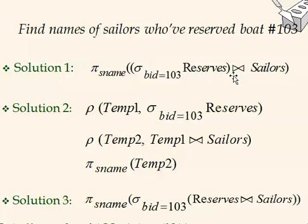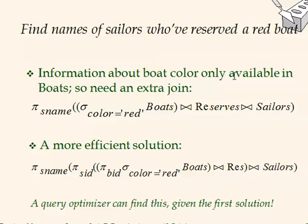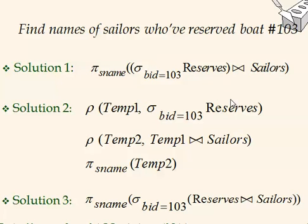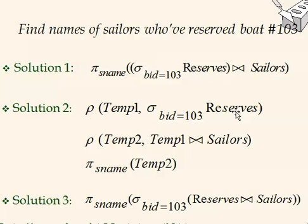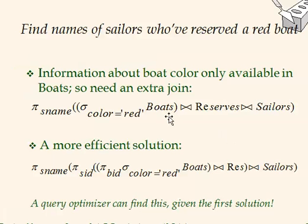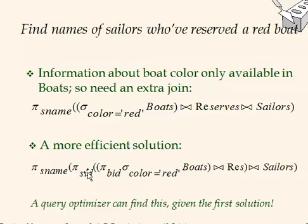Next query: find sailors who have reserved a red boat. Since reserves does not have a color attribute, we need to join with the boats table. Solution one simply joins all three tables. A more efficient solution first applies selection and projection on boats to get only red boats and reduce the table size before performing the Cartesian product, making the query more efficient.